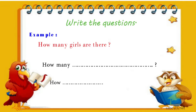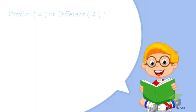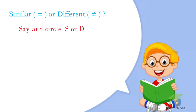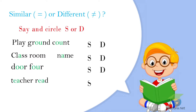Similar or different? Say and circle S or D. Playground, count, classroom, name. I circle S — classroom, name — different, I circle D. Door, floor — similar, I circle S. Teacher, read — similar, I circle S.